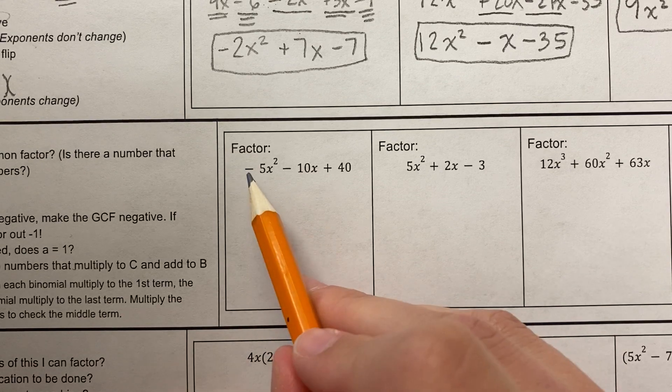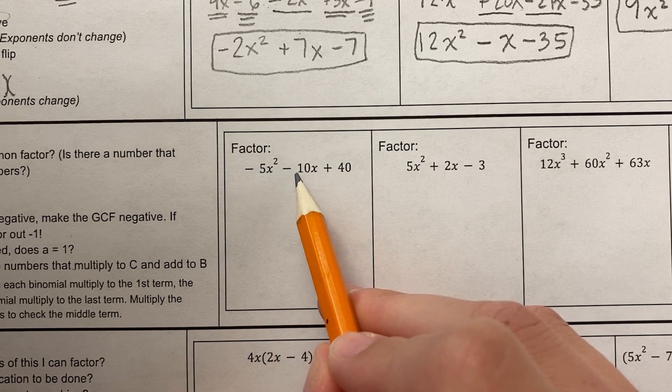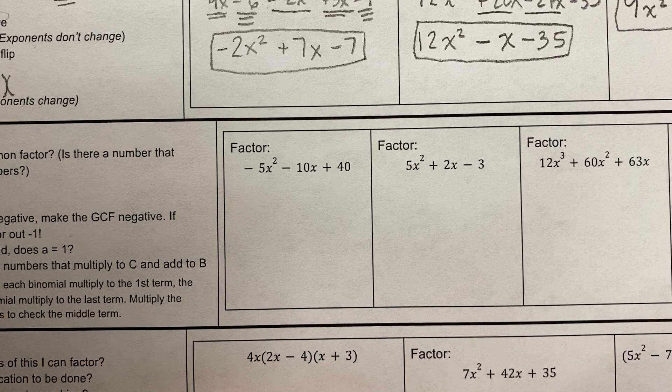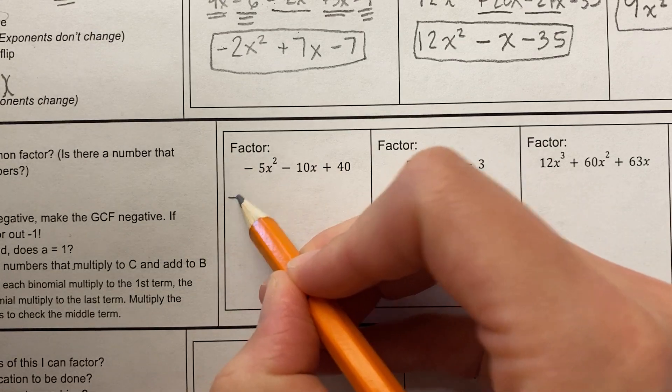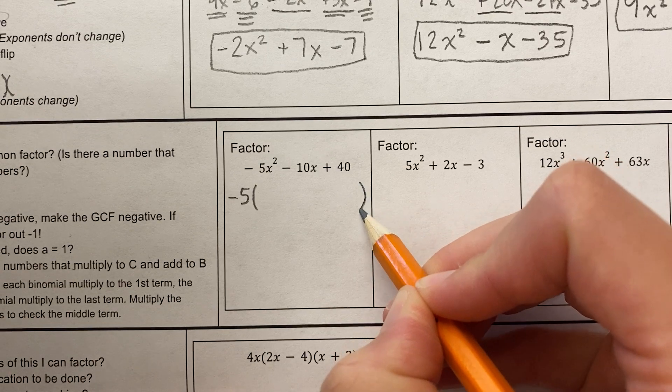Is there a GCF here? Well first, I notice this is negative. I also notice there's a number that multiplies to five, ten, and forty. What is it? Oh yeah, negative five. So look, this one's gonna have a GCF. Look, I'm gonna just set it up like this.